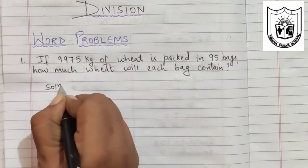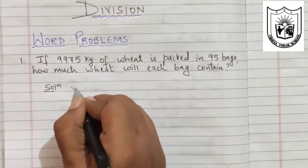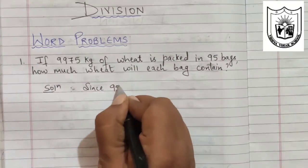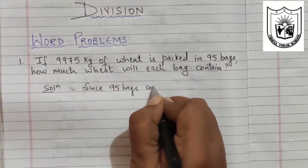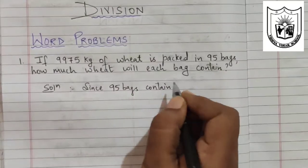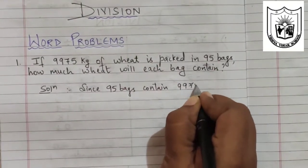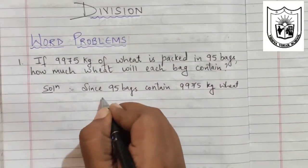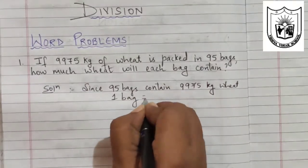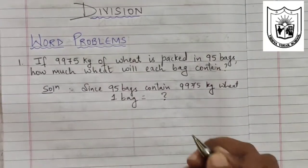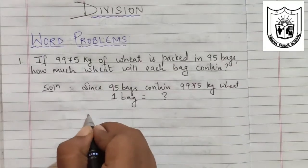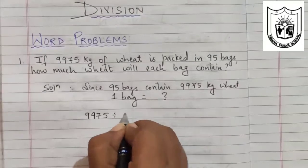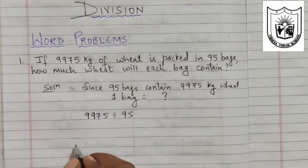Solution, you will write first. Since 95 bags contain 9975 kg of wheat, so one bag will contain how much? So how do we find this? We will have to divide 9975 by 95. So let us divide this.